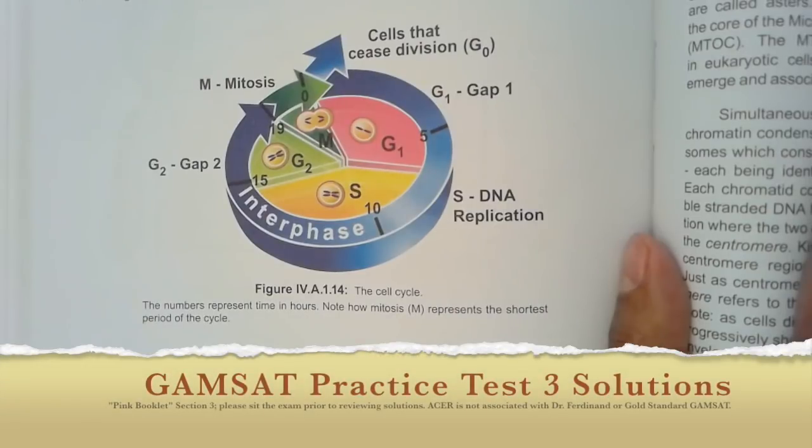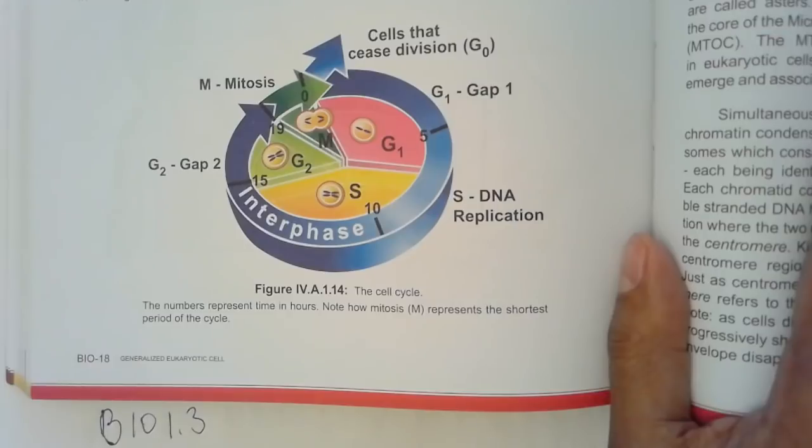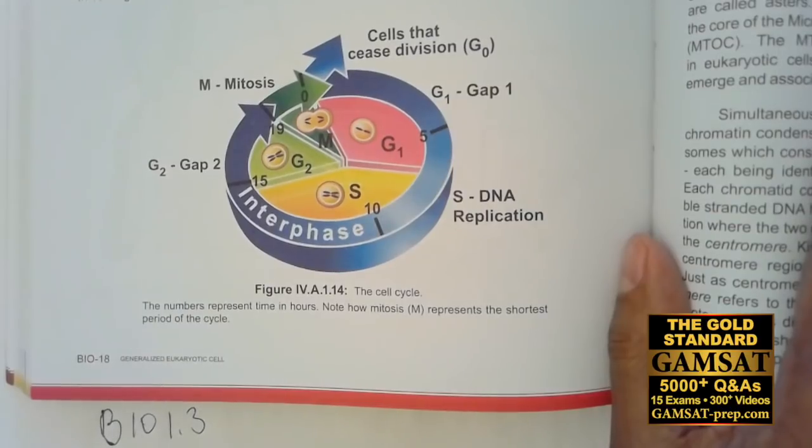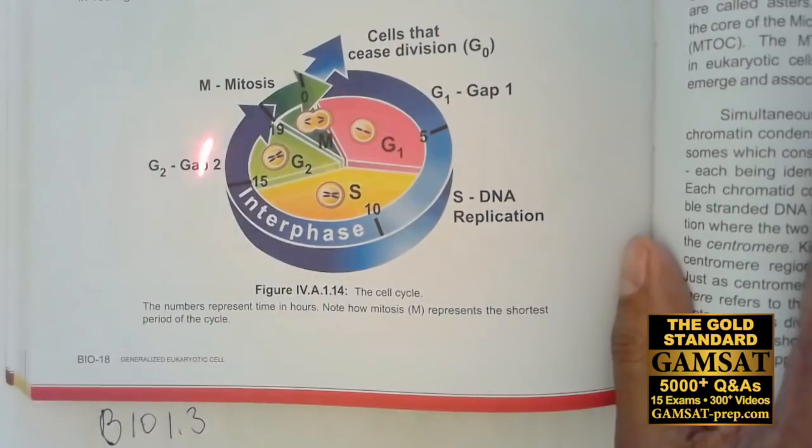Questions 11 to 13. This is from the book biology section 1.3 and it shows you the cell cycle similar to what ACER has, just a minor difference but very easy to see how it coordinates with what they do.